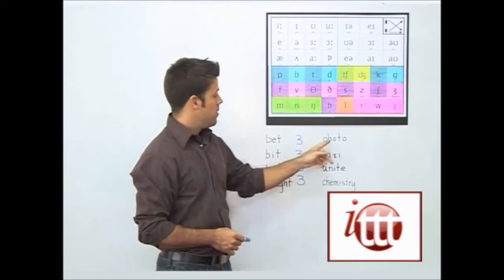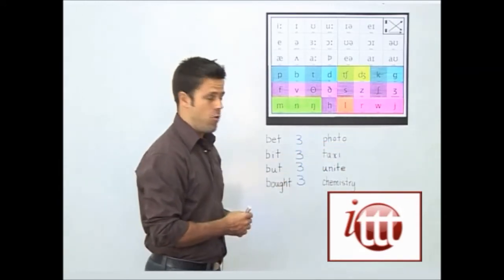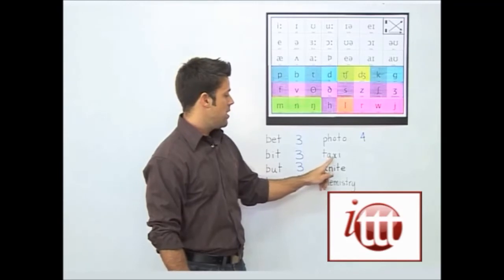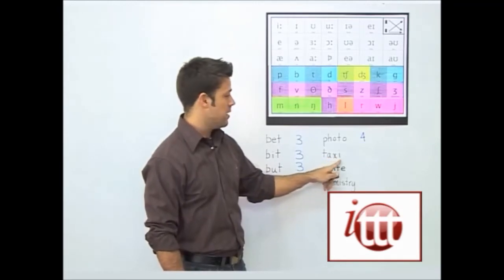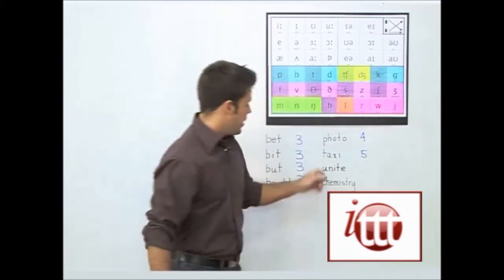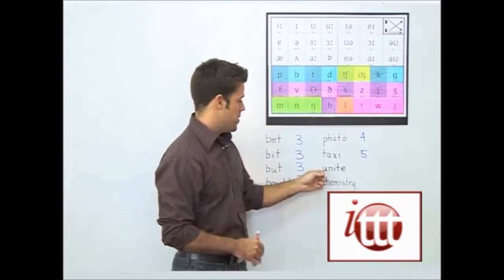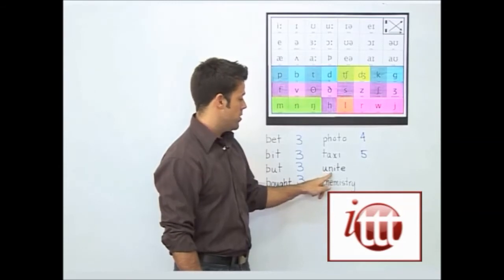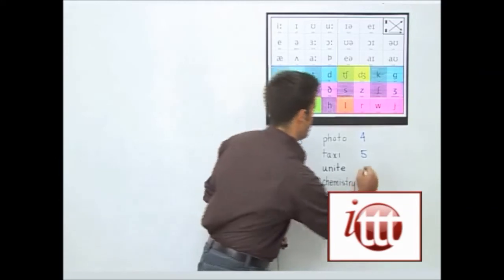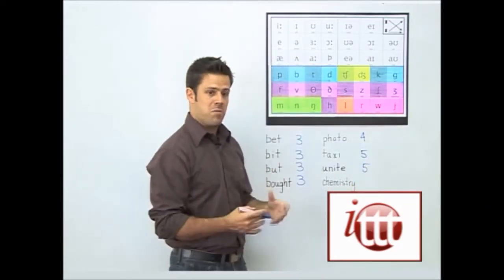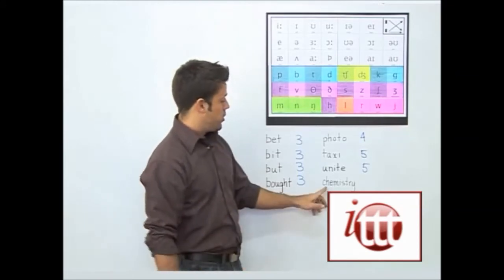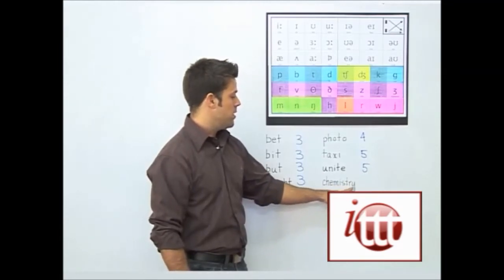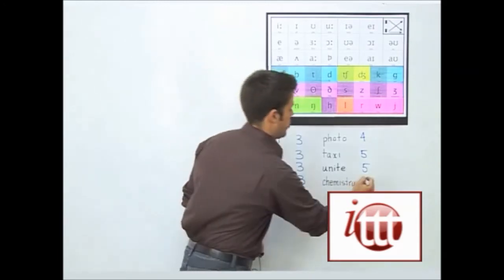Now we have photo — F, O, T, O — that's four phonemes. Then taxi — T, A, K, S, I — that's five phonemes. We have unite, which has a hidden phoneme — the Y sound before anything else — Y, U, N, I, T — five phonemes as well. And now we have a longer word, chemistry: K, E, M, I, S, T, R, I — that's eight phonemes used in the word chemistry.